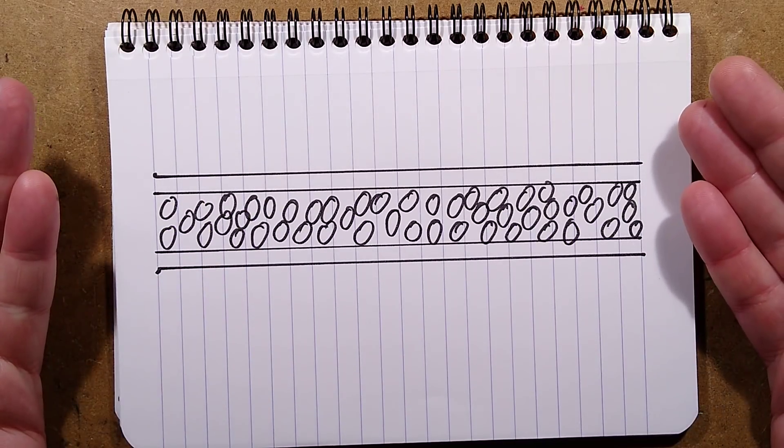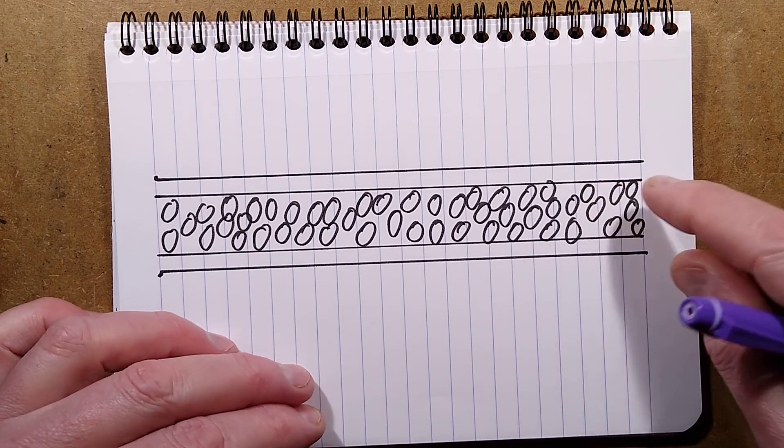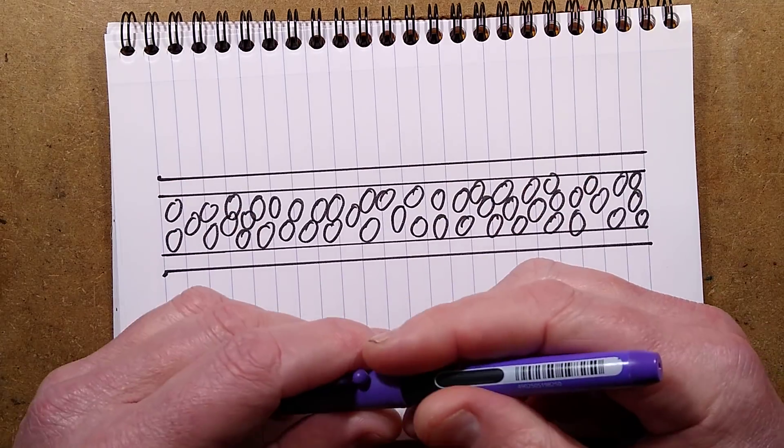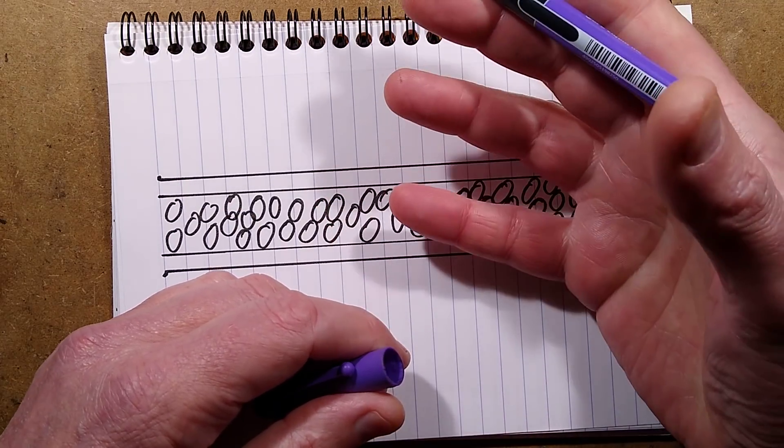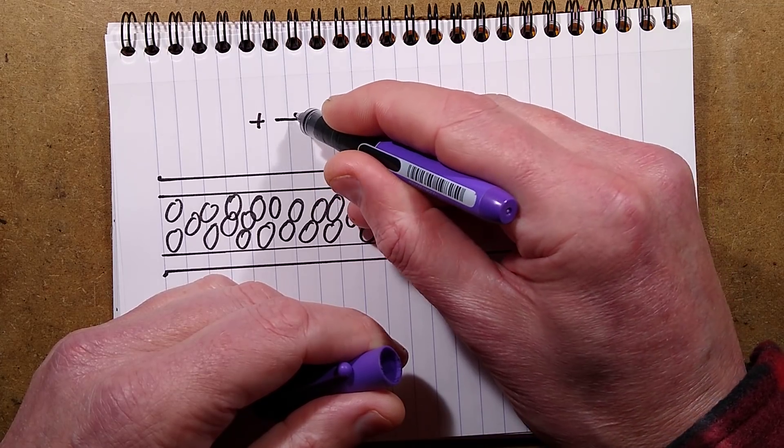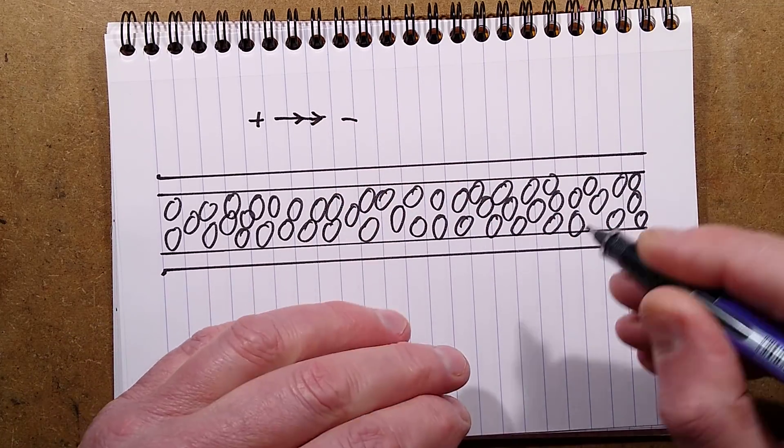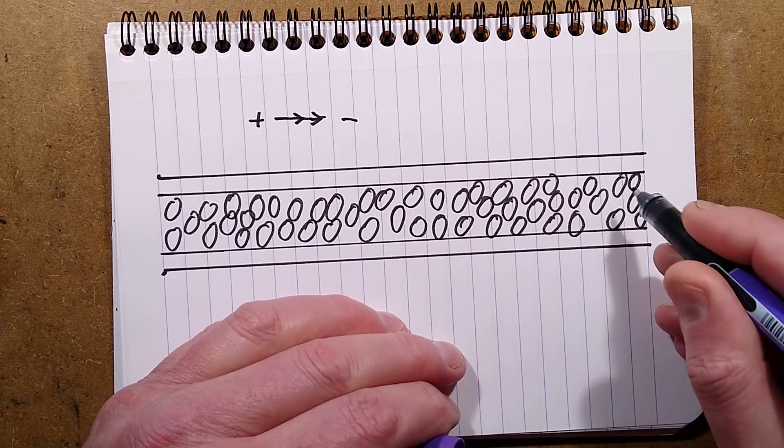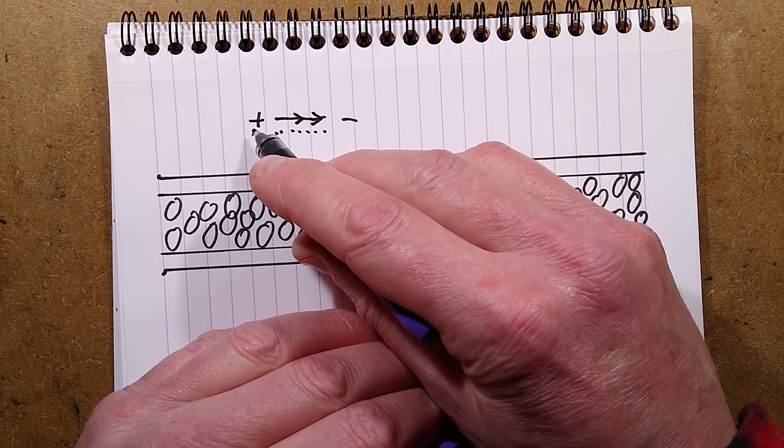And before I even start with this, I have to explain that because I'm talking about raw electrons, I normally like to use what they call conventional electron theory because in the early days, and this shows you how things can change, in the early days they thought that current flowed from positive to negative. They later found that electrons actually flow in the opposite direction. The electrons actually flow from the negative to the positive.